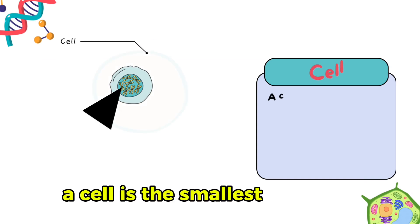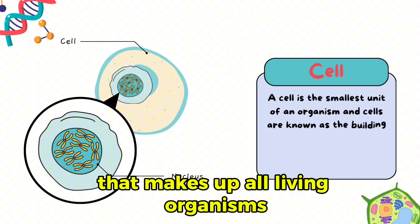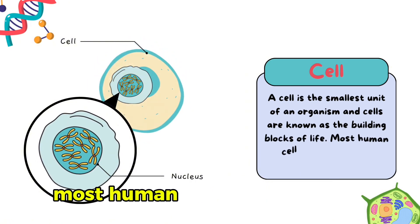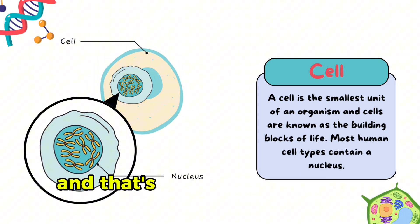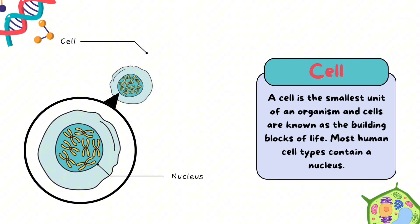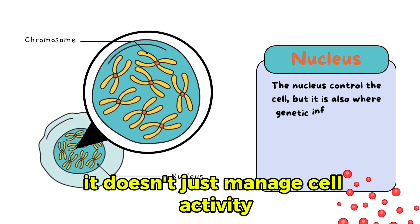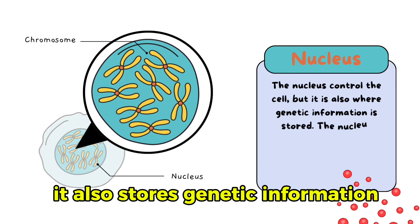A cell is the smallest unit of life. It's like a tiny building block that makes up all living organisms. Most human cells have a nucleus, and that's where the real magic happens. The nucleus is the control center of the cell. It doesn't just manage cell activity, it also stores genetic information.